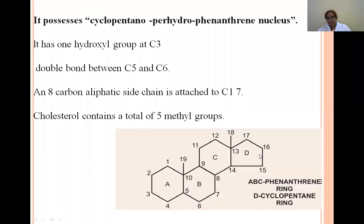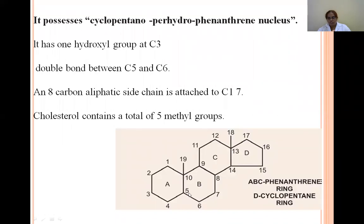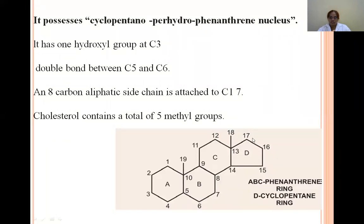The rings A, B, C, and D are completely fused together. The numbers on the structure indicate the carbons. This cyclopentanoperhydrophenanthrene ring contains a hydroxyl (OH) group at C3, a double bond between C5 and C6, and an aliphatic side chain attached at carbon-17. This aliphatic side chain contains 8 carbons.